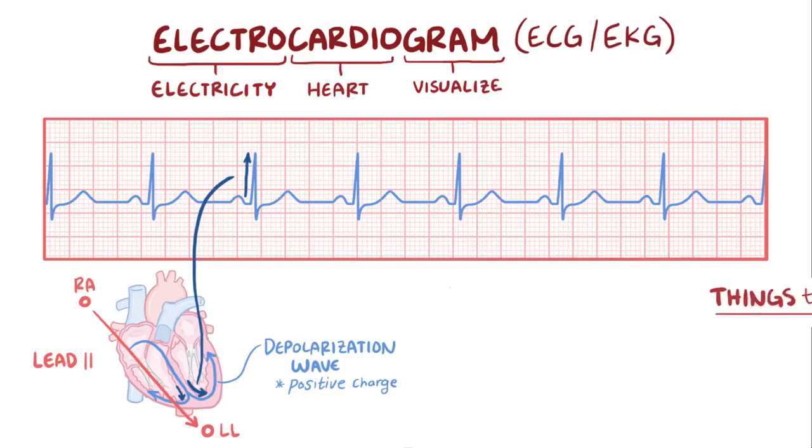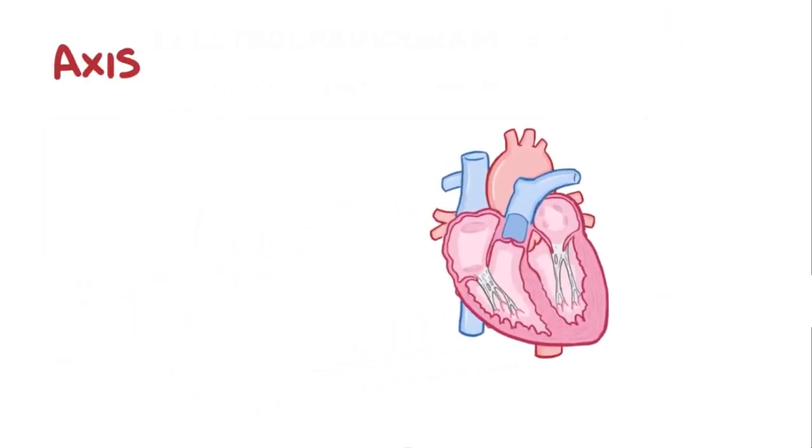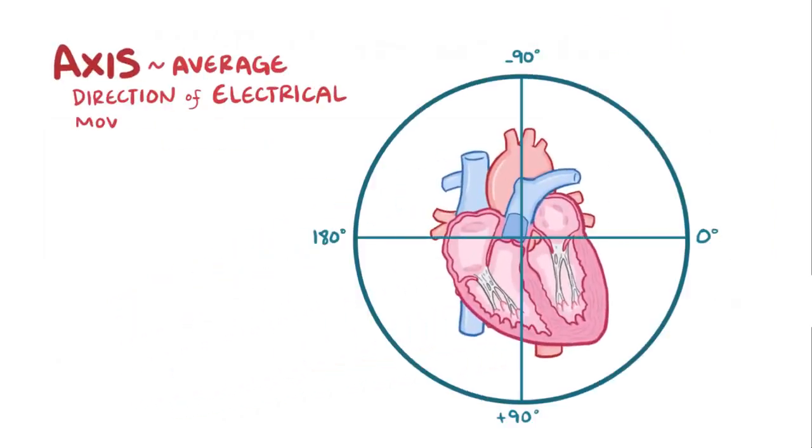To read an ECG, there are a few key elements to keep in mind, and one of them includes figuring out the axis. The axis of an ECG is the average direction of electrical movement through the heart during a depolarization. More specifically, axis usually refers to the mean QRS vector, which is the size and direction of the depolarization wave as it moves through the ventricles.